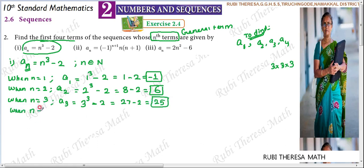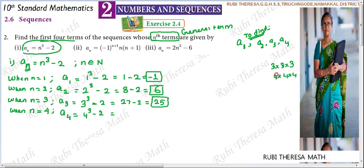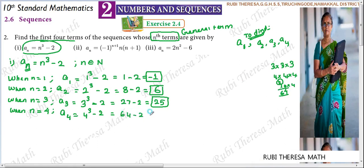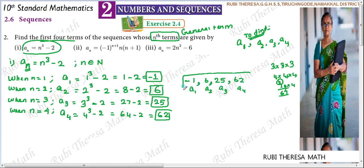In order to find the 4th term, n equals 4. A4 = 4³ - 2. The value of 4 cubed is 64 — 4 fours are 16, 16 fours are 64. So 64 minus 2 equals 62. The first four terms of the sequence are: -1, 6, 25, 62.